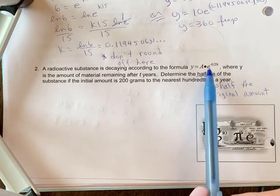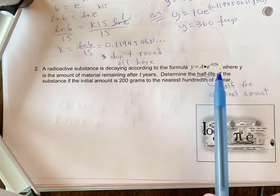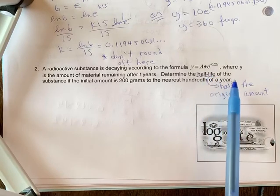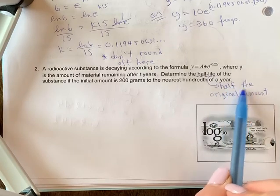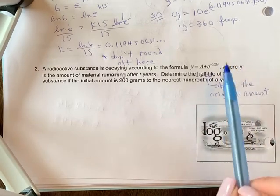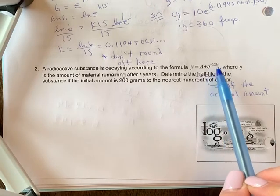The initial amount is always going to be that number out front of the e value. Half-life, remember, is the time it would take for the substance to be cut into half of its original amount. Now we've already got the k value in here, or the growth rate. It's negative because it's decay.